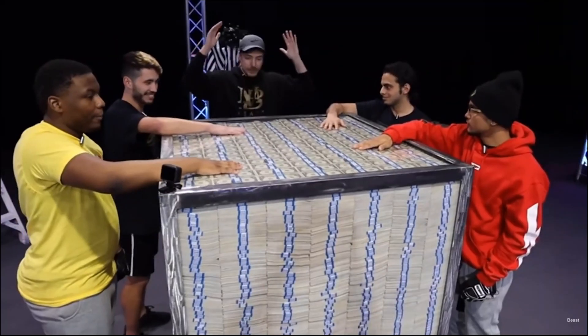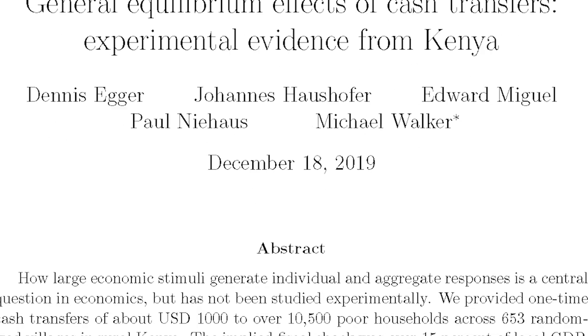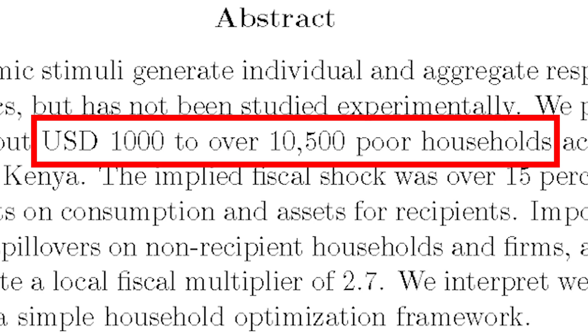What if MrBeast went to Kenya and gave people $10 million? Well, a group of economists actually did this. They went to Kenya and found 10,000 families and gave each family about $1,000. 18 months later, the economists came back to see how those families were doing. I'm going to explain what happened with these economists, these Kenyan families, and how MrBeast can help us understand what's going on here.